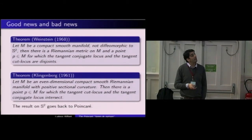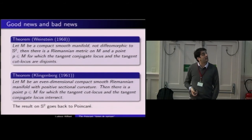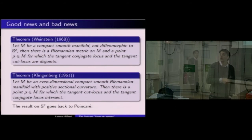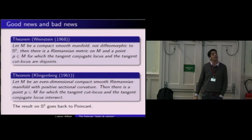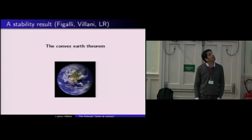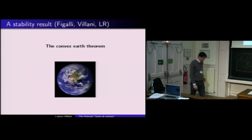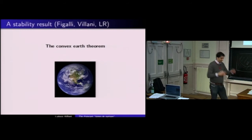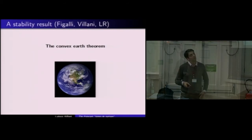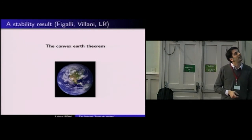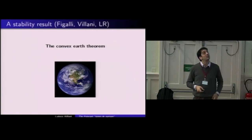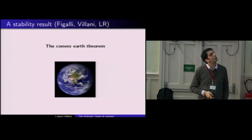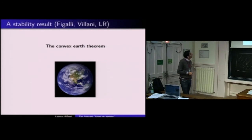As I said, as long as you're working on a compact manifold with certain geometric properties, you can't escape the problem of focalization. It's going to be very difficult to study what happens at conjugate points, and we can't fully resolve this today. I will tell you about the stability result which justifies the title of my talk. When we look at the sphere, the domain of injectivity is uniformly convex, even constant. We can ask what happens if we perturb the two-dimensional sphere slightly. The answer is yes: convexity is preserved. This is a result we obtained recently with Alessio Figalli and Cédric Villani.